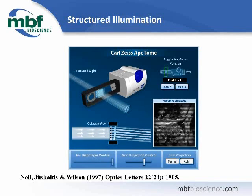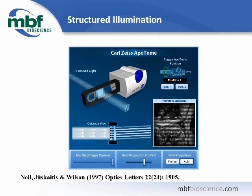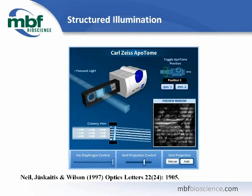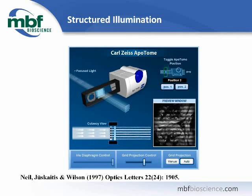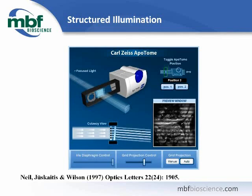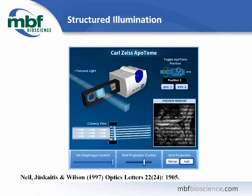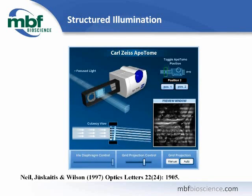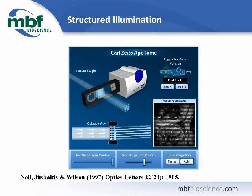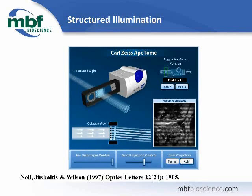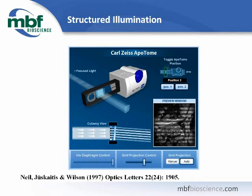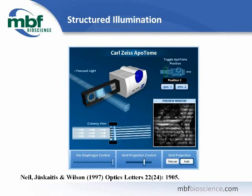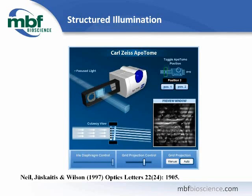You switch between the two positions by physically moving the slider. In position 1, the slider is partially out of the F-slot. In position 2 for Apatome mode, the slider is fully inserted. You will hear a beep when the Apatome is in place. When the Apatome is in position 2, you will see the grid pattern wobbling. This helps keep bleaching of the sample even to reduce the risk of residual grid lines in your Apatome images.